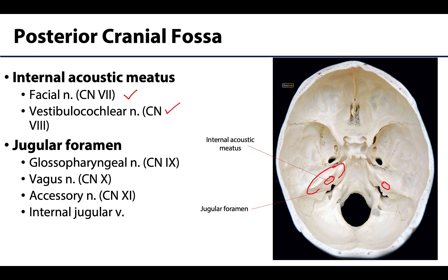One of the most interesting foramina are the jugular foramina, which even on either side look a bit different and have a uniquely complex shape. During life, the sigmoid dural venous sinus sat in the groove leading into the jugular foramen, draining blood from the brain. At the jugular foramen, a name change occurs and this is where the internal jugular vein begins — that large vein in the neck into which all the dural venous sinuses drain.